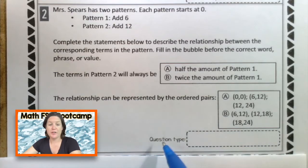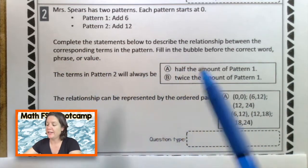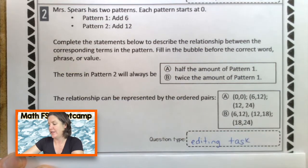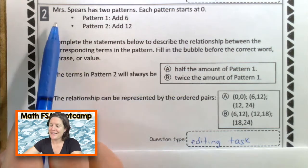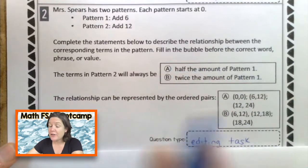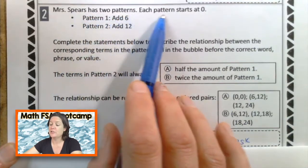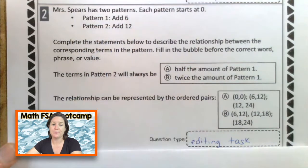Let's take a look at number two. All right. First, just by looking at the question type and seeing complete the statements below, fill in the bubbles before the correct word, all that. And then these two boxes, I know that this is going to be an editing task or like a hot text kind of is what they call it. So let's read it. We have Mrs. Spears. Mrs. Spears, you are a fabulous teacher at Pershing. I hope that you are doing well and shout out to all your students. Mrs. Spears has two patterns. All right. Hang on. So again, looking at this, we've got a lot of words. Do not get scared. Be brave and break it down. Right. Mrs. Spears has two patterns. Each pattern starts at zero. Pattern number one, we're going to add 6. Pattern number two, add 12. Okay. Before I even get to that, I'm actually going to go ahead and take the time to break this down so it makes sense for me.